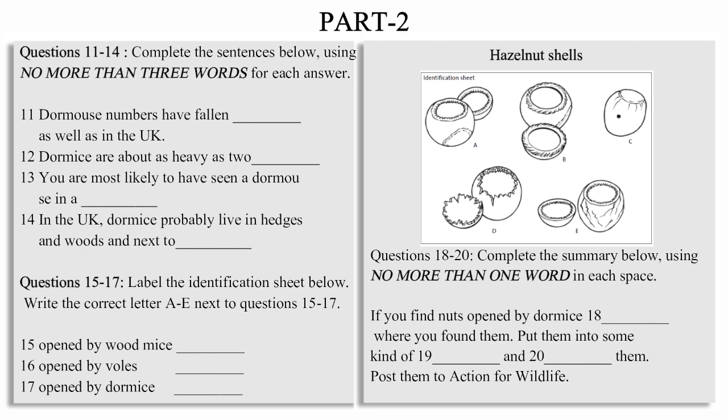Now listen and answer questions 15 to 20. If you find one, use the identification sheet to try and establish what kind of creature has opened it. You'll see from the pictures on the sheet that different creatures do it in different ways. For example, you'll see that insects make a small hole in the shell, less than 2 mm across. Then there's another type of mouse called a wood mouse. Wood mice make a hole in the shell too, but they leave parallel tooth marks on the inner rim of the shell, as well as rough scratches on the surface. Thirdly, there are little mammals called voles.